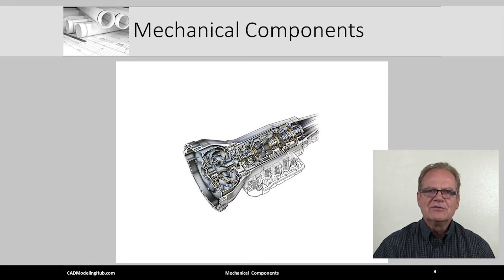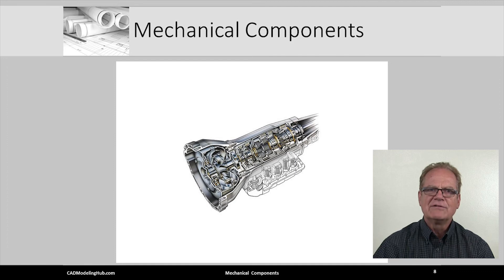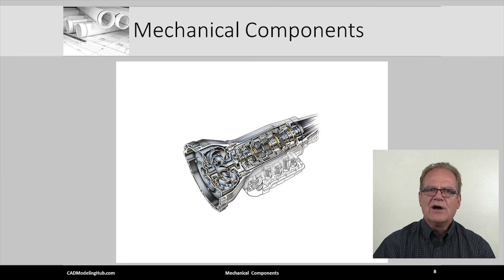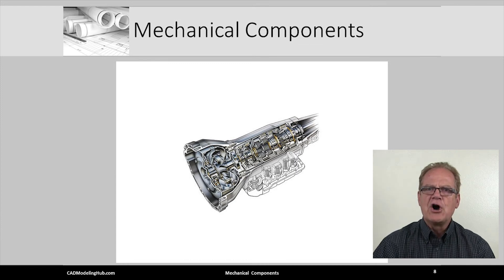There are gears, shafts, bearings, bushings, forks, levers, cases, discs, etc. In addition, assemblies like this transmission have lots of hardware, which is the general term used to refer to nuts, bolts, washers, pins, clips, etc. Another way to understand what mechanical components are and their drawings is to understand what they are not.